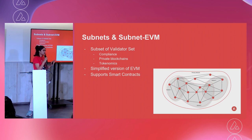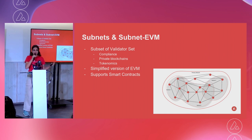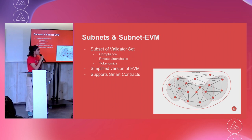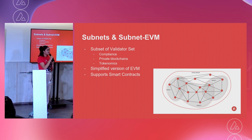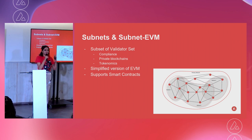A subnet can also have many blockchains. We can think of the primary network — the X chain, C chain, P chain — as also the primary subnet. What's cool about subnets? You can do whatever you want with them. You can have KYC so they follow compliance laws, do your own tokenomics, make it private, make it your own custom blockchain. The subnet EVM is an even more simplified version of the EVM and also supports smart contracts.